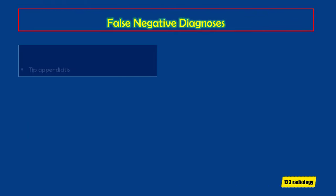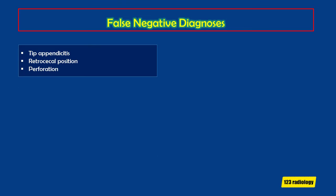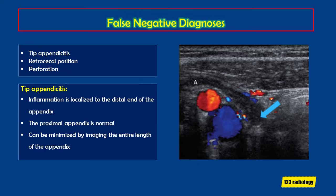Causes of false negative diagnoses include tip appendicitis, an aberrant location of the appendix such as a retrocecal position, and perforation. In tip appendicitis, the inflammation is localized to the distal end of the appendix, with the proximal appendix being normal. This pitfall can be minimized by imaging the entire length of the appendix. In this case example, the proximal appendix looks normal but the tip appears dilated at about 8 mm with increased echogenicity of the surrounding fat.